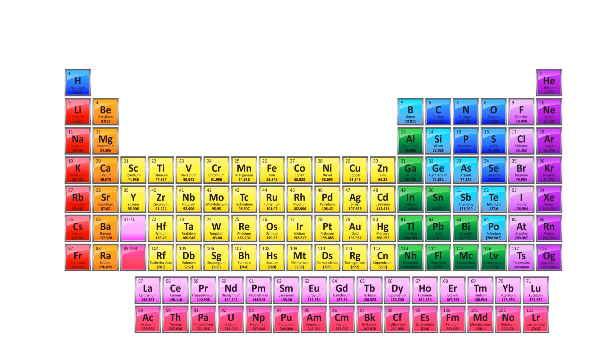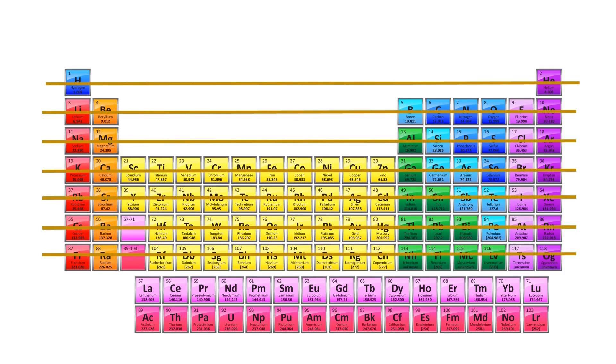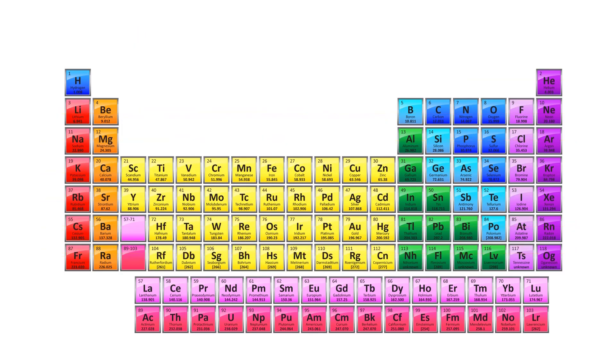On the other hand, elements are also arranged in rows. These rows are what we call periods. Periods are the horizontal rows on the periodic table. There are 7 periods, which are numbered 1 to 7 from top to bottom.